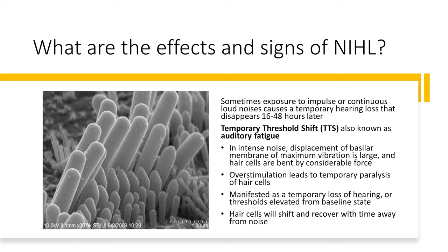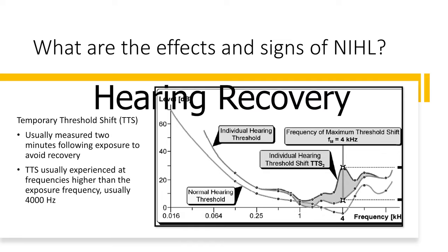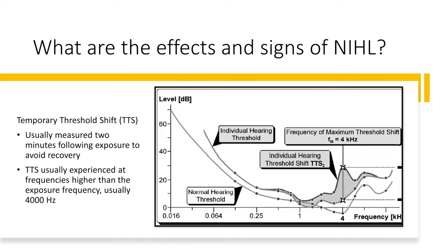This temporary hearing loss can last anywhere from two days to two weeks. However, if you haven't started to show recovery after about 48 hours, you've probably received permanent damage. Temporary threshold shift is usually measured about two minutes following exposure to a loud noise. It is typically experienced at frequencies higher than the exposure frequency — the greatest threshold shift is usually around 4000 Hz, where we're most sensitive to sound. The loss in the mid-range of 1000 to 4000 Hz is why voices typically sound muffled during temporary hearing loss.